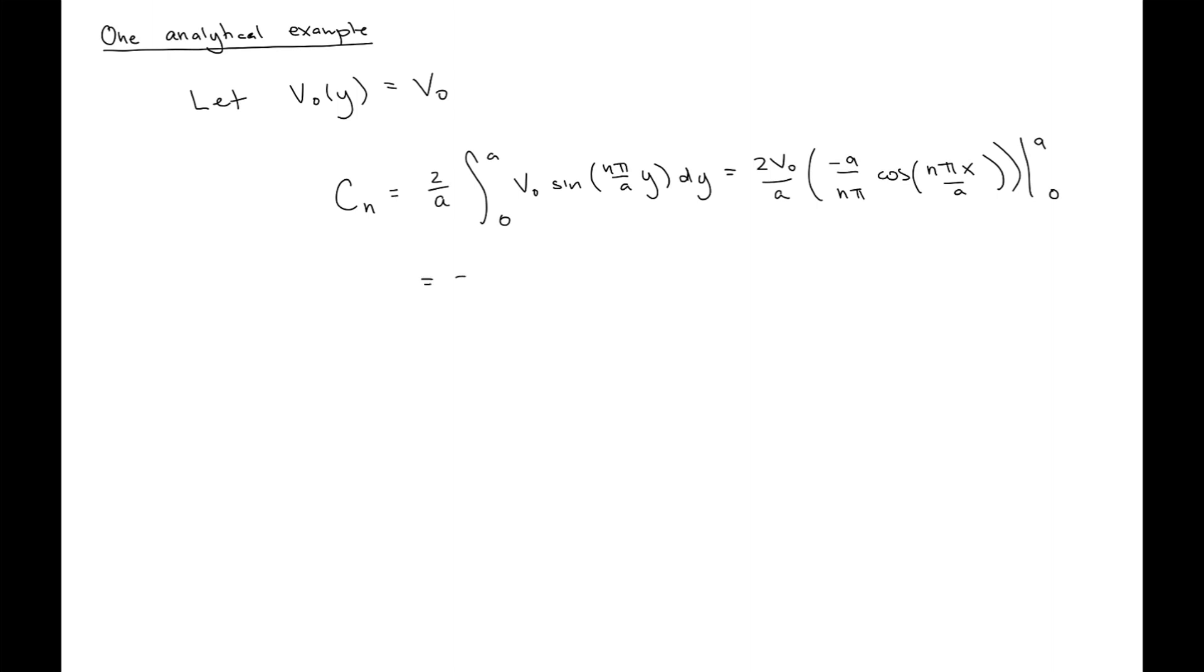Because of that, I can pull V naught out. And then I just have to take the integral of the sine function. That's going to give me this guy here, evaluated from A to zero. So when I do that, I'll end up getting negative 2 V naught divided by pi times the cosine of N pi minus 1. Let's go ahead and evaluate this for different N's to see if we can figure out a pattern.